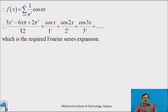Therefore, putting the values of a₀ = 0, aₙ = 1/n², and bₙ = 0, we get the Fourier series for the given function.